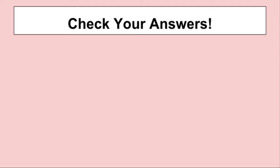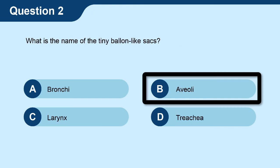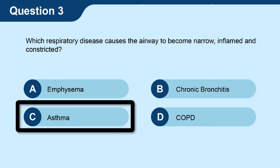Okay guys, it's now time to check your answers. Question one: which of the following can be used as a method to diagnose asthma, chronic bronchitis, emphysema, and COPD? The answer is B — chest X-ray. Question two: what is the name of the tiny balloon-like sacs? The answer is B — alveoli. Question three: which respiratory disease causes the airway to become narrow, inflamed, and constricted? The answer is C — asthma.